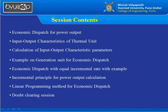The contents we are going to cover include: economic dispatch for a particular power output; input-output characteristics for a thermal generating power plant; how to calculate input-output characteristic parameters; a solved example on economic dispatch for a thermal unit; the incremental factor and its relation to economic dispatch; power output calculation using the incremental concept; and finally the linear programming method for economic dispatch.